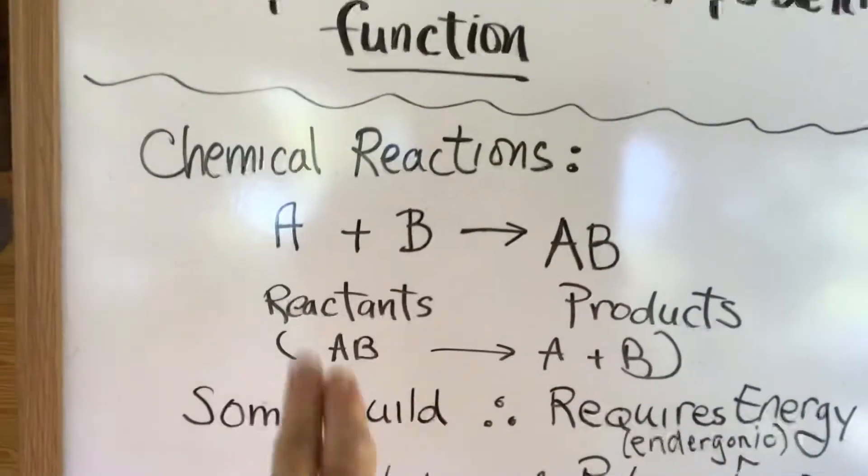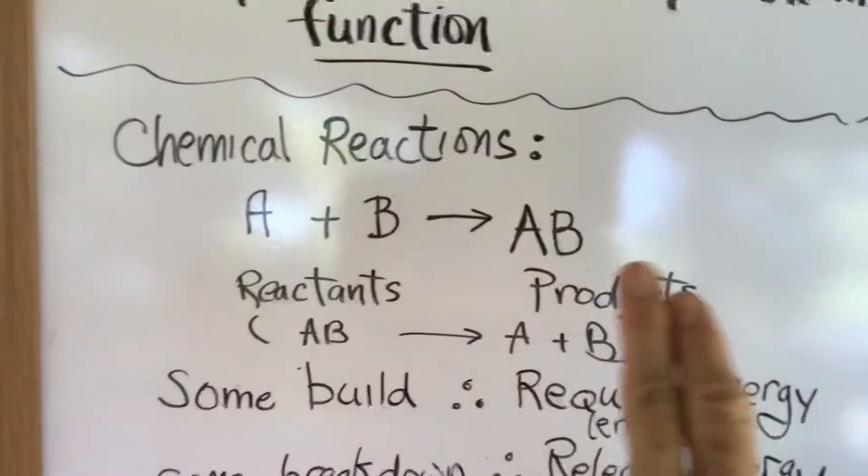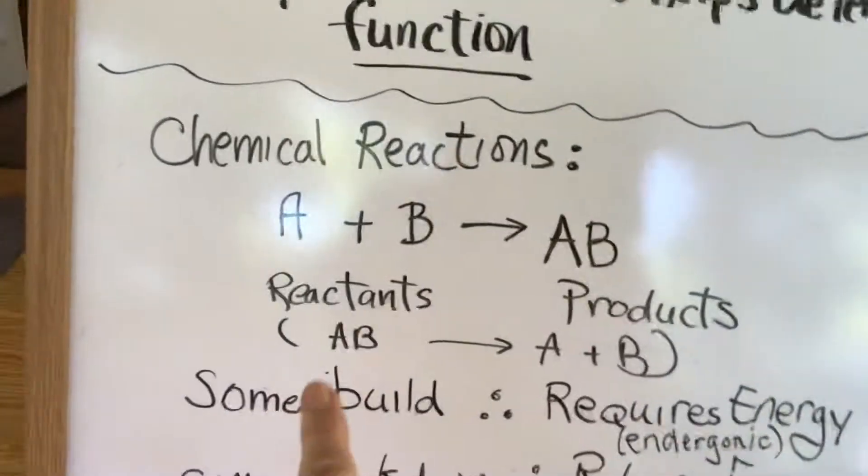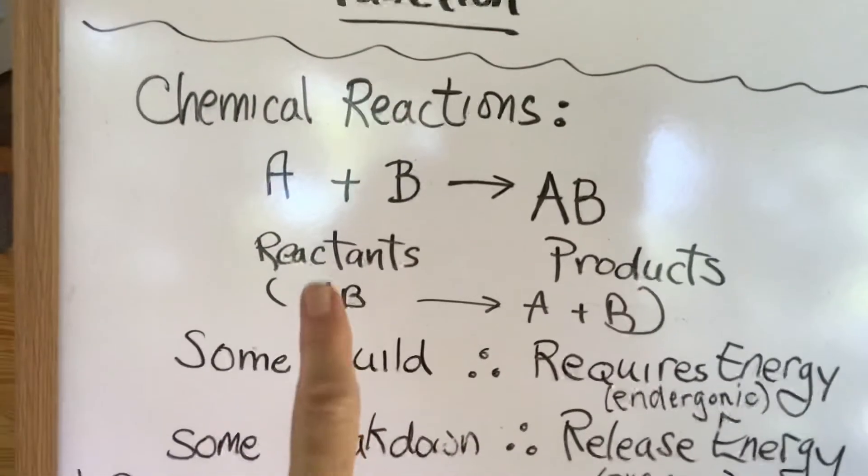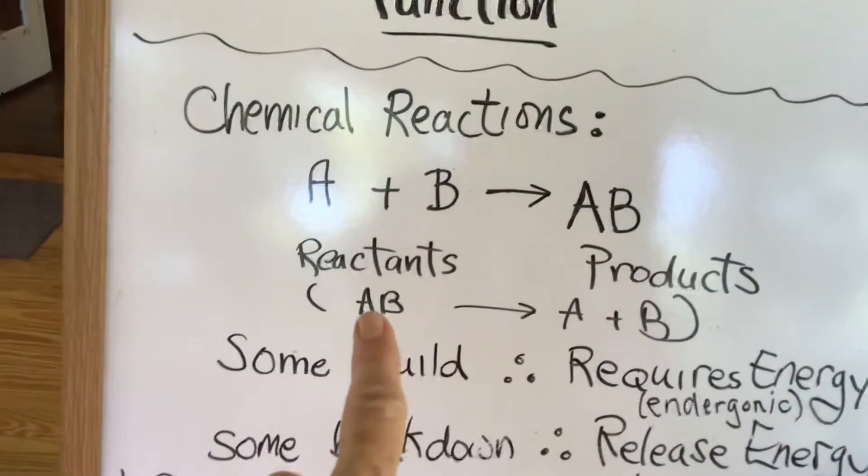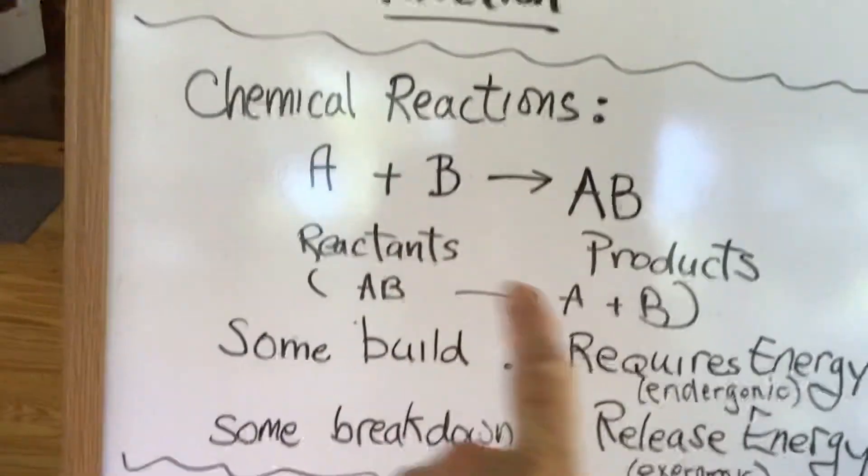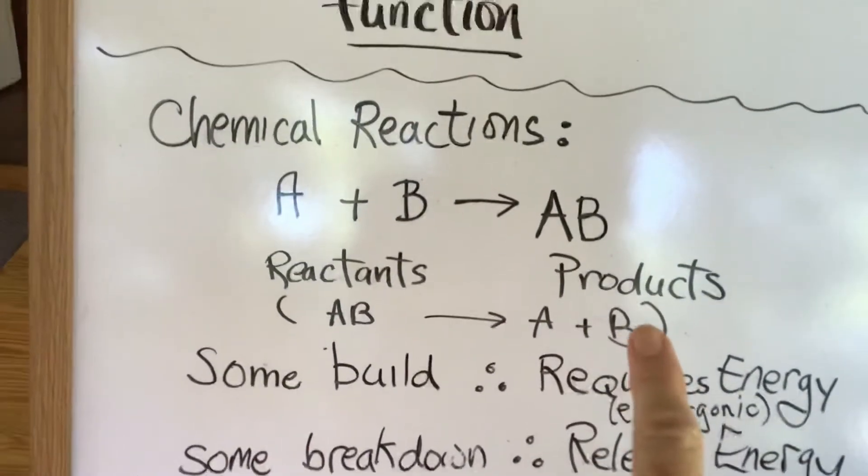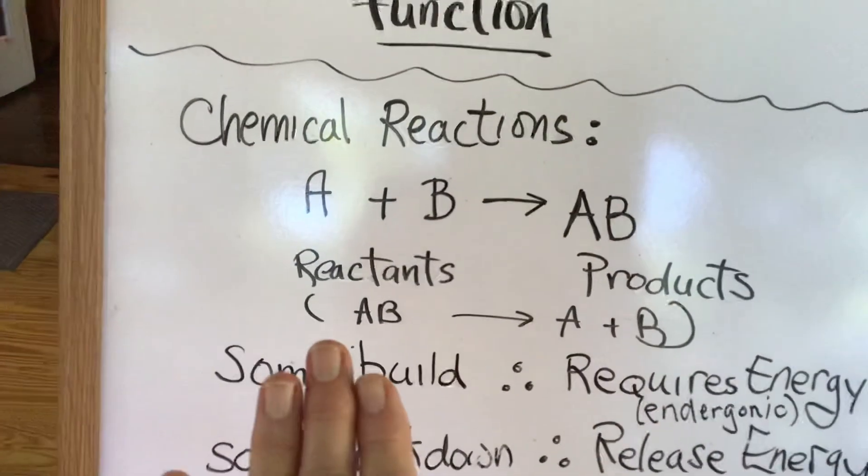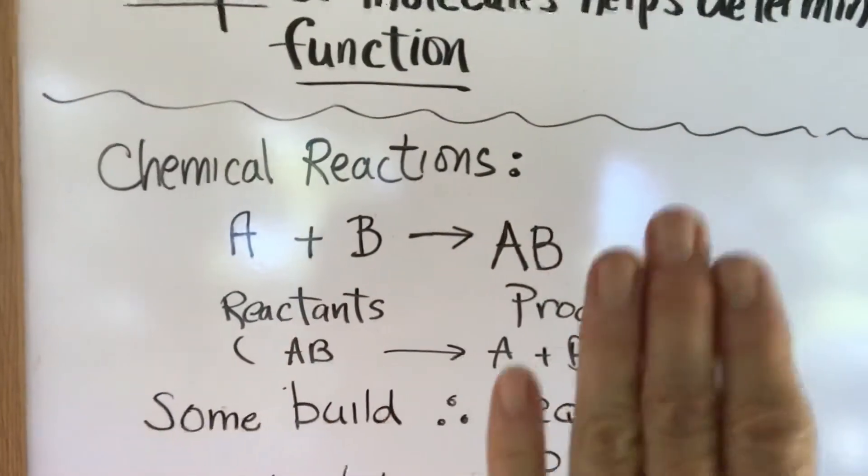The things on the left are called the reactants, and the things on the right are called the products. You can also go the other way, so I can have a reaction where the reactants are on this side, that is AB, going to the products A + B. Whatever's on the left is called the reactant. Whatever's on the right is called the product.